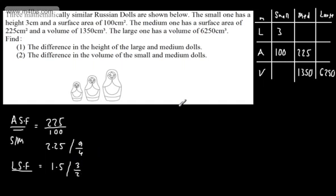So the linear scale factor between the medium and the small is 1.5. We can start filling out the table: 3 multiplied by 1.5 gives us the height of the medium doll as 4.5 centimetres.